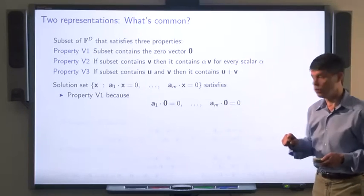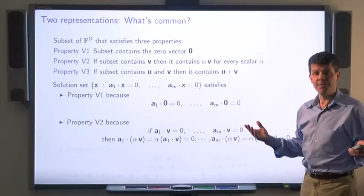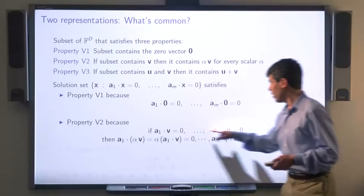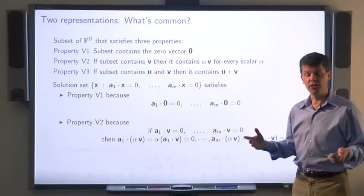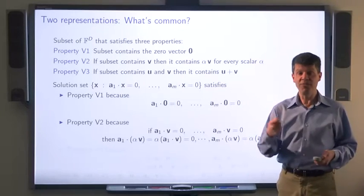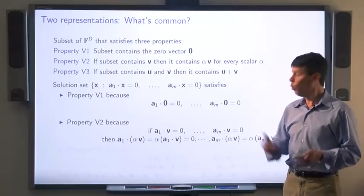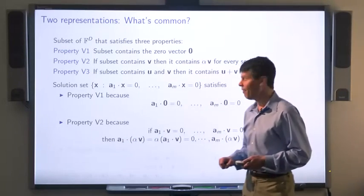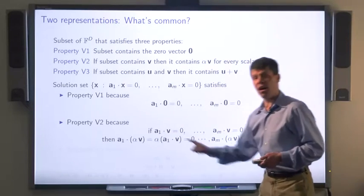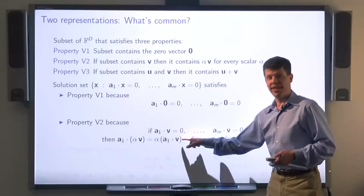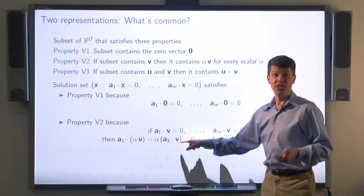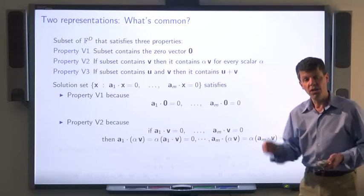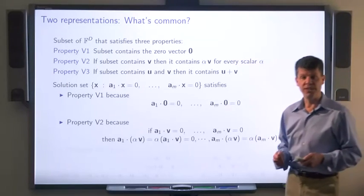For property V2: take some vector in the solution set, meaning all its dot products with the ai's are equal to zero. Consider whether alpha times that vector also lies in the solution set. The dot product a1·(alpha·v) equals alpha·(a1·v), which is alpha times zero, which is zero. So all these linear equations also hold for alpha·v, proving property V2.